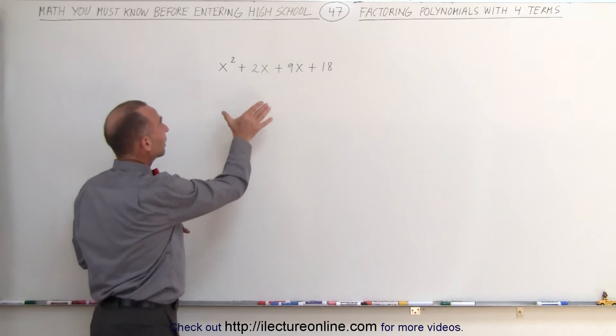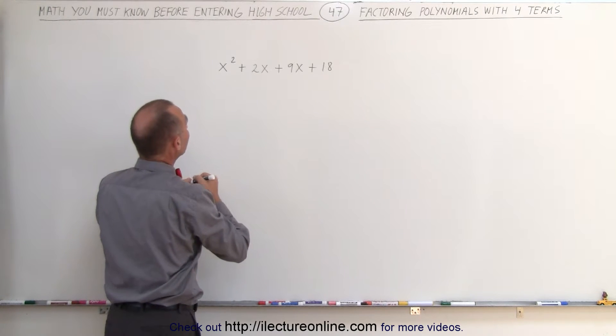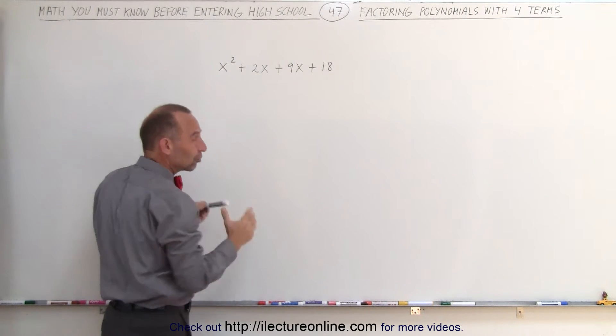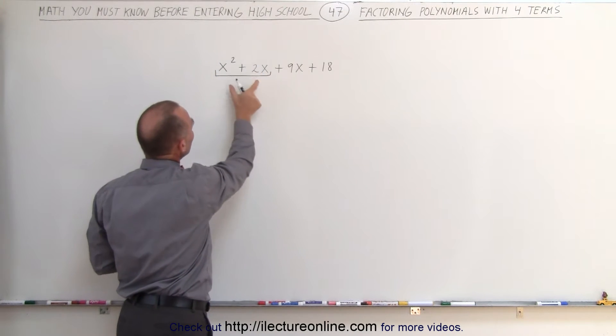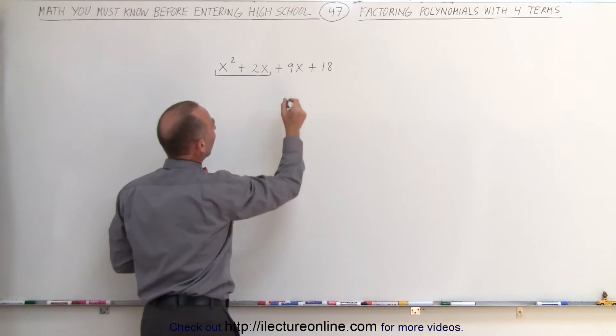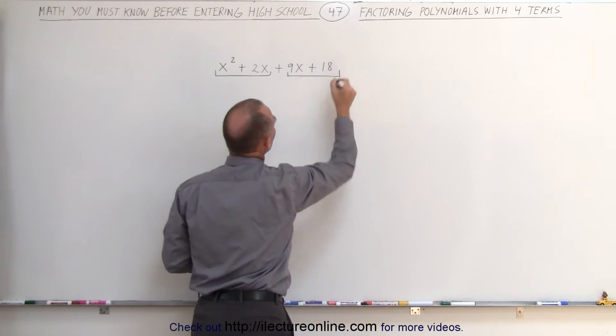What we do is, for example, take the first two terms and group them together. And one way to make it easier to see what we're trying to do is to simply put a little bracket underneath it like that, which means we're going to group these two together. And now we're also going to group these two together.